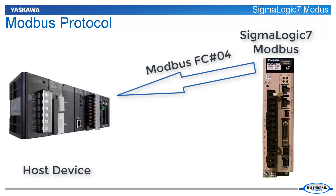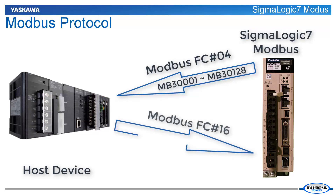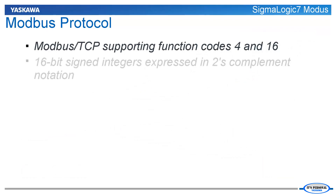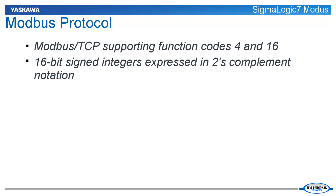The product supports Modbus function code 4 to read input registers 300001 through 300128, and function code 16 to write multiple holding registers 400001 through 400128. Data is sent and received by the Sigma Logic 7 Modbus as 16-bit signed integers using two's complement notation. It also stores its data in little-endian format.